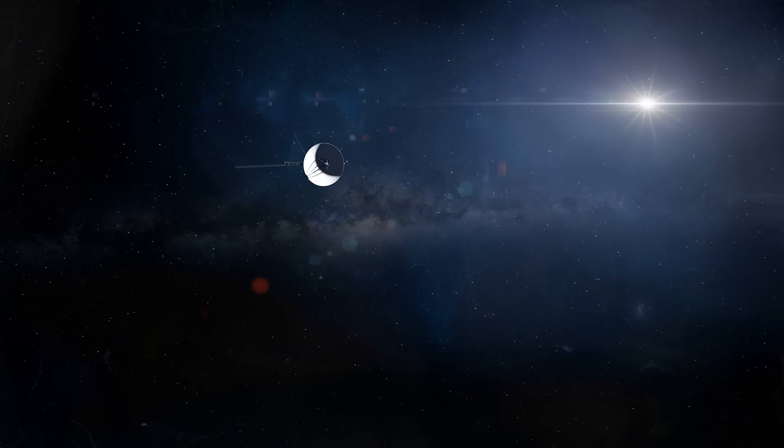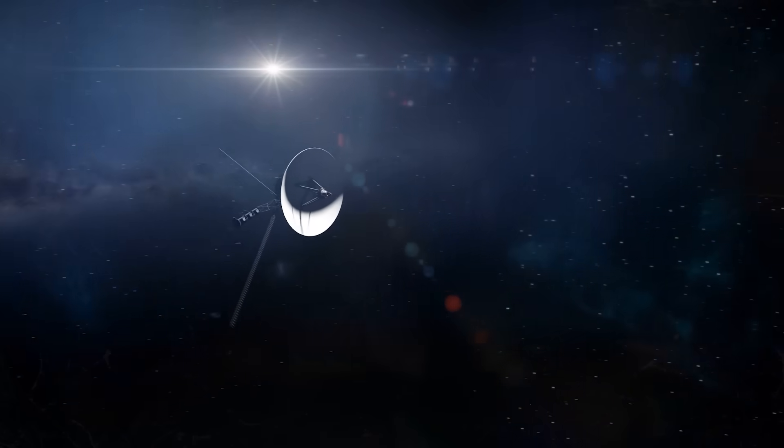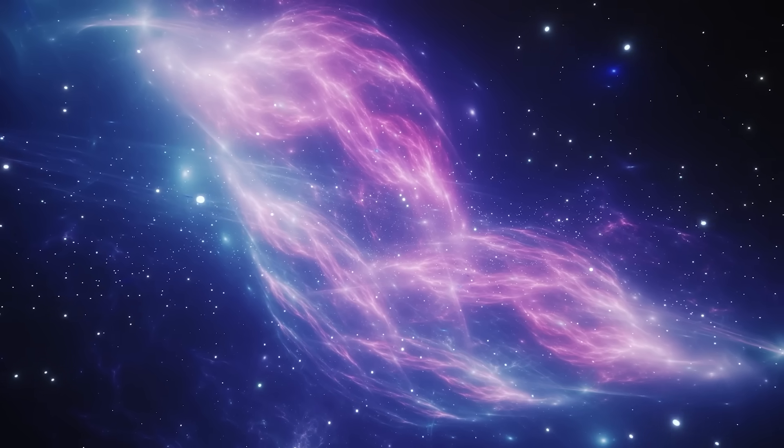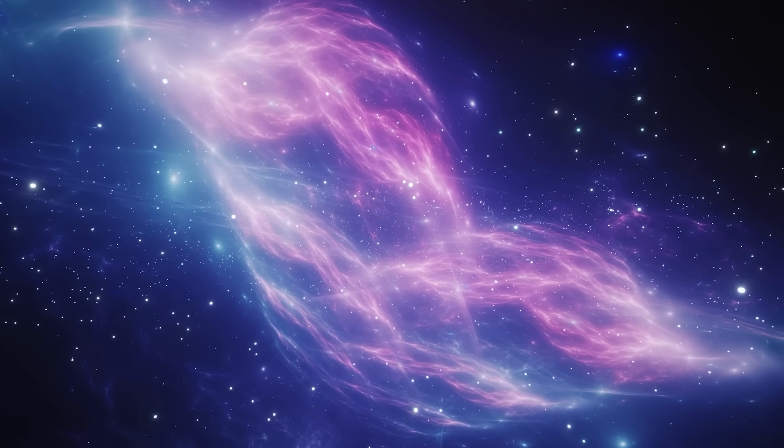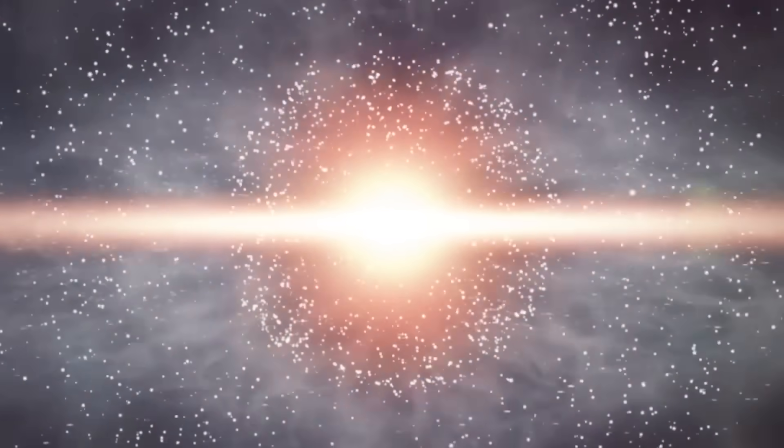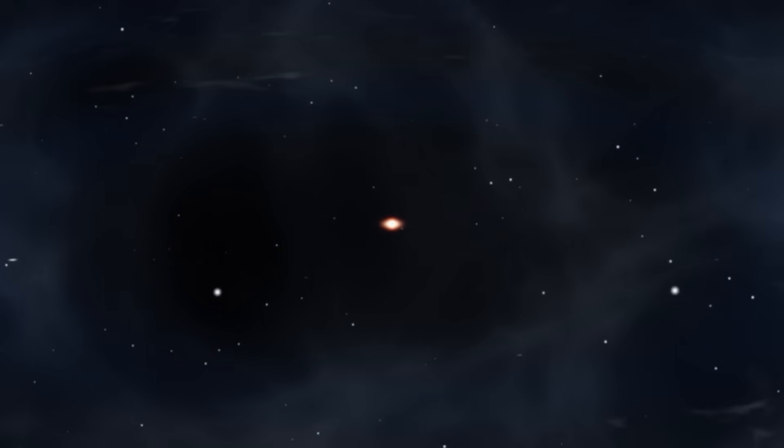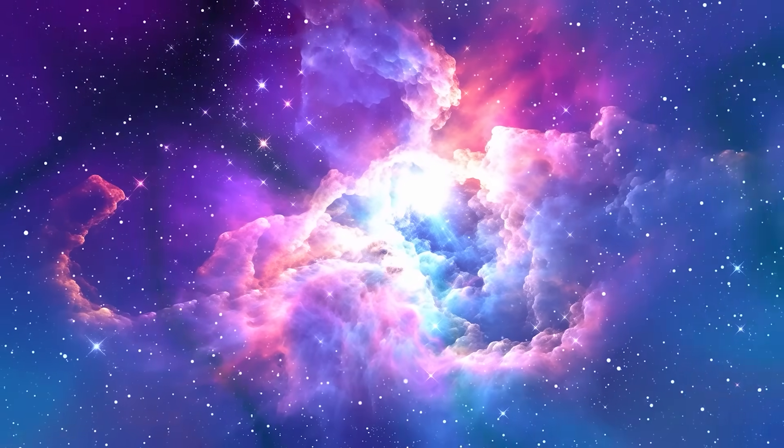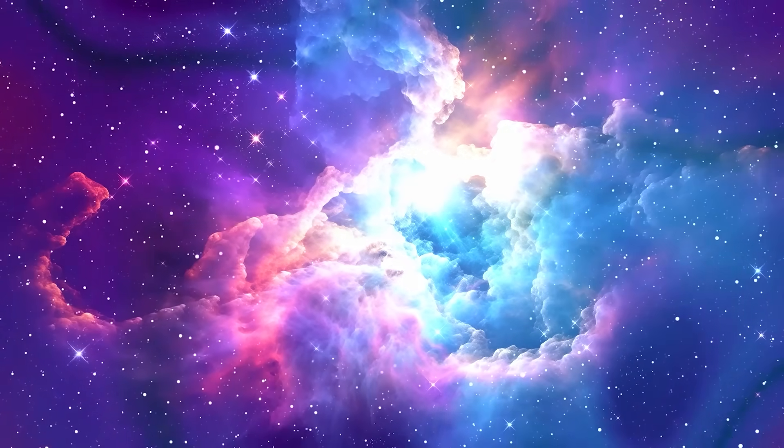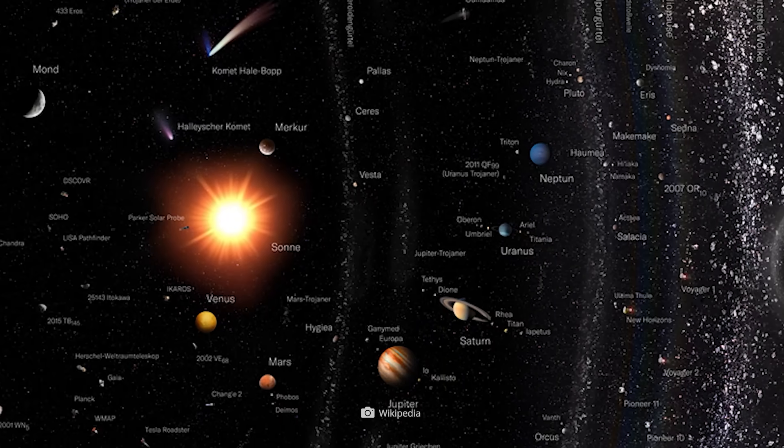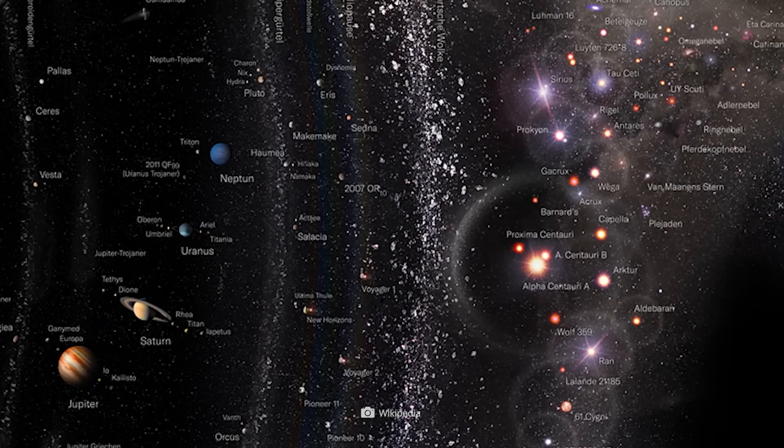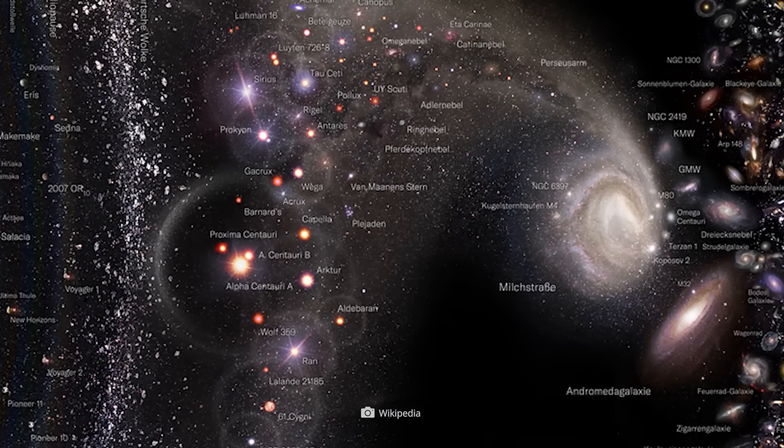Despite all the spaceflights, probes, and high-tech telescopes, the totality and exact shape of the cosmos still represent the great unknown. The Big Bang theory basically suggests that the universe is spherical in shape, but this is just one of many assumptions. When it comes to the question of shape, other geometric objects are also consulted, including the donut-shaped torus and even a trumpet.